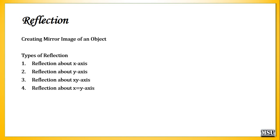If an object is located at the first quadrant and you are creating a reflection about the x-axis, after reflection the object is located at a different quadrant — that is, if you are using a clockwise rotation. Similarly, we will identify for each and every reflection and define a formula for that.